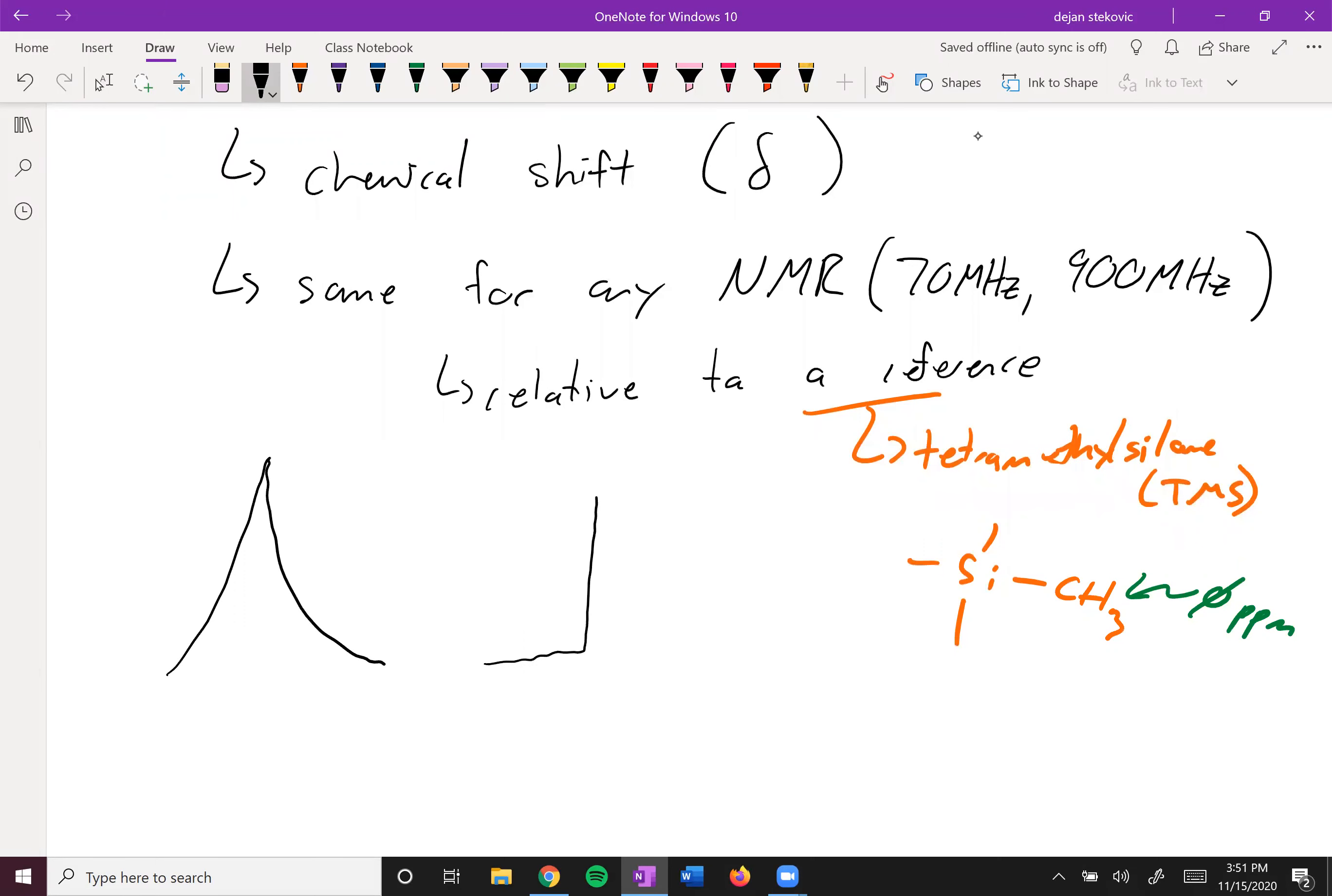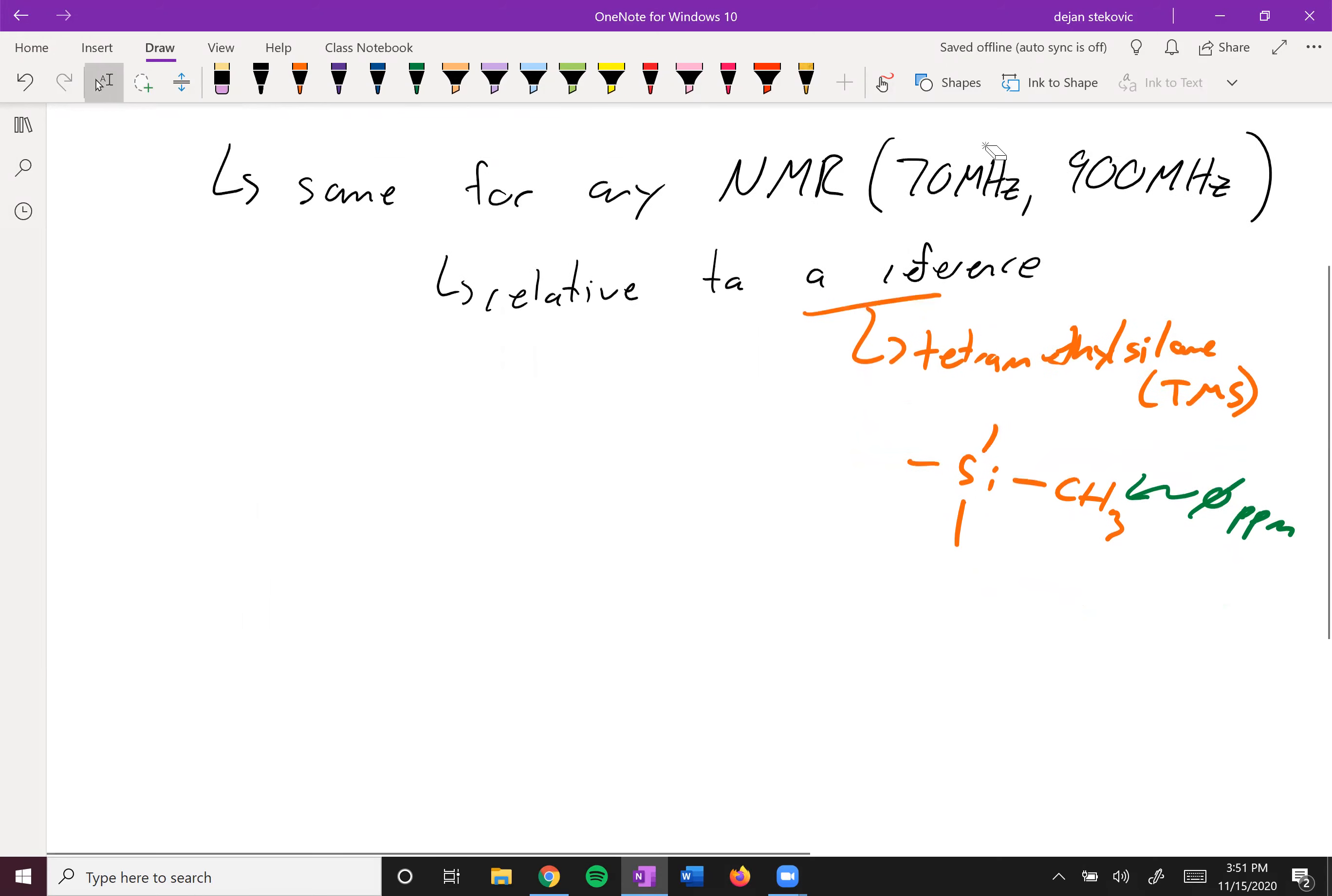And if you have the same peak for a 900 megahertz NMR, it'll look something like this. And so this is useful if you have kind of multiple peaks. When you have better resolution, they won't overlap one another, and you can see the differences in them much better.